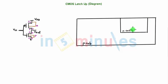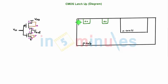Now let's make our NMOS. NMOS has N-type diffusion, shown in green — this is my source and this is my drain of the NMOS. The body is P-type, and this substrate needs to be connected to ground. For that we need a substrate tap, which through metallization will connect it to ground.